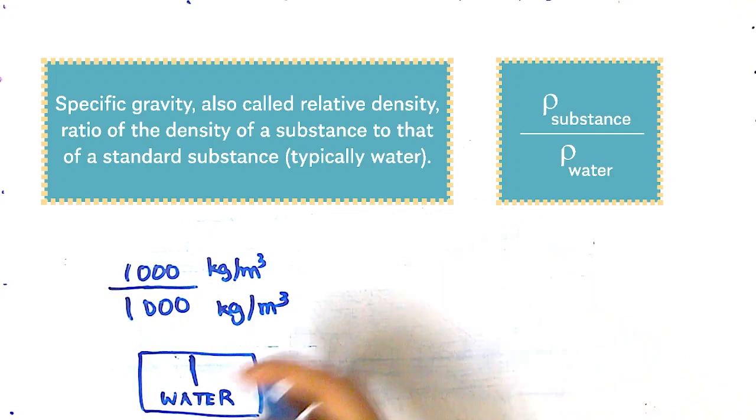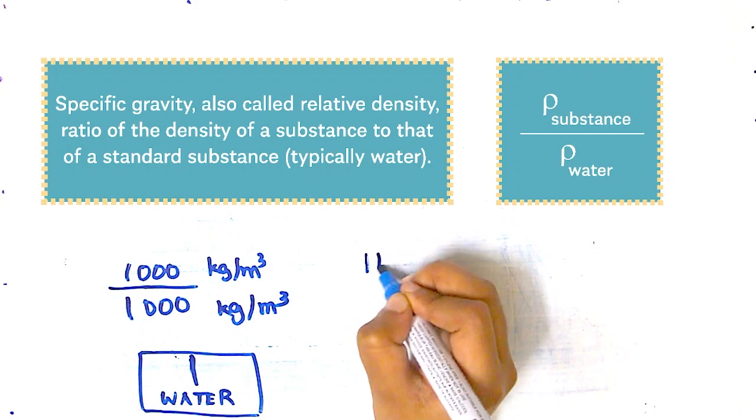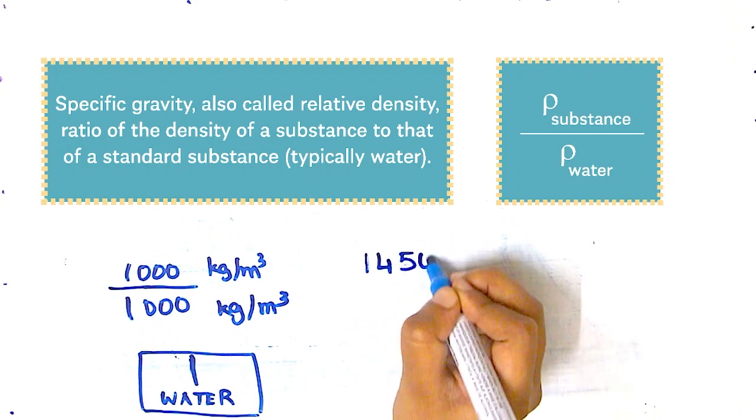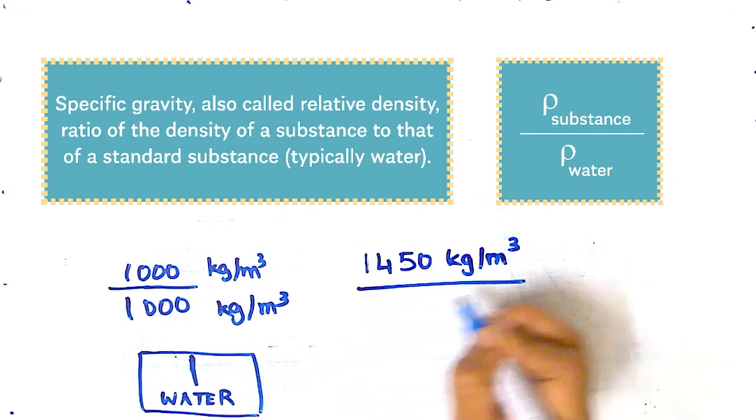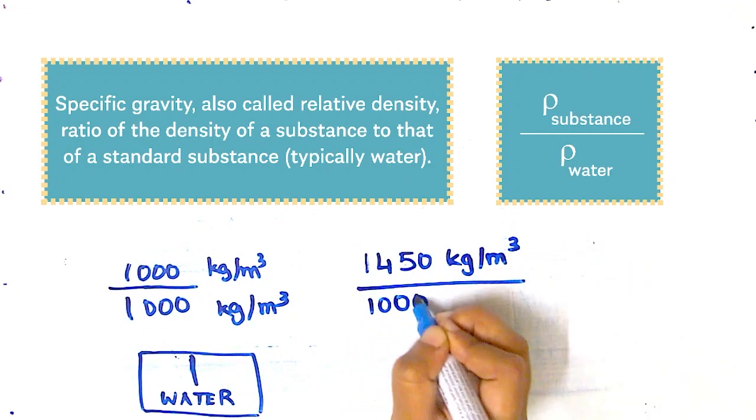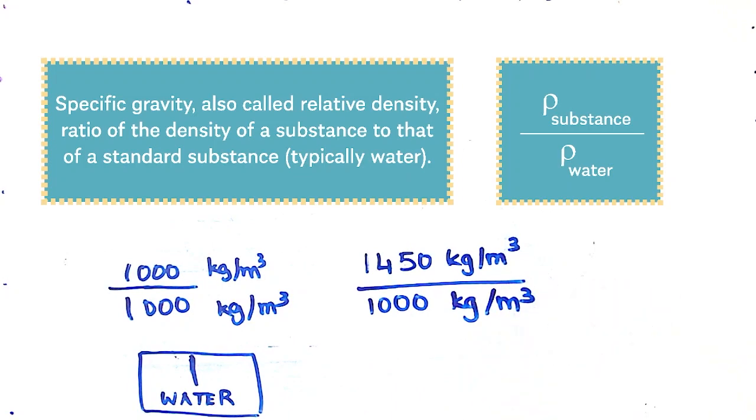Now let's look at the honey example. We saw that the density of honey was 1450 kilograms per meter cube. We take the ratio of that over the density of water, and so for honey, the specific gravity would be 1.45, and no units again because they would be cancelled out.